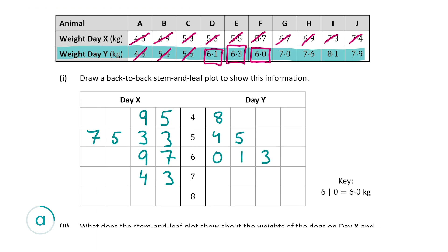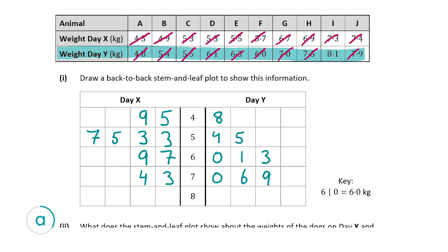It's very important to have the values in the correct order — the row along 6 on the Day Y side should be 0, 1, 3, and any other order is incorrect. Then we have three values on Day Y that start with 7: 7.0, 7.6, and 7.9. Be careful that 7.9 is included, as 8.1 appears between 7.6 and 7.9 in the table. So that's 0, 6, and 9 alongside the row with 7 in the stem. Finally, 8.1 gives a 1 alongside 8 on the Day Y side.